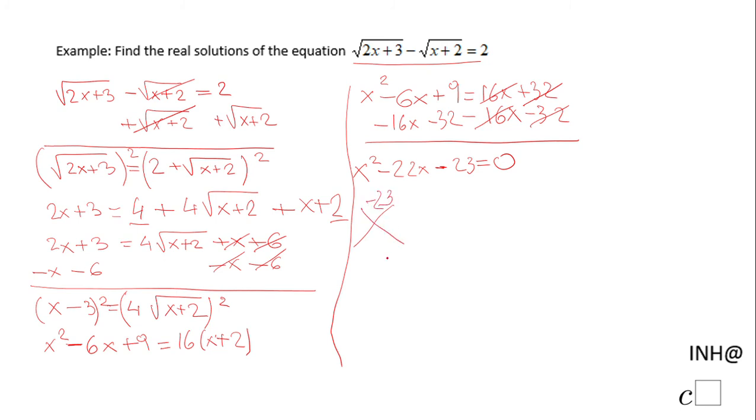That will be negative 23 and 1. So the factor form will be x minus 23 times x plus 1 equals zero.